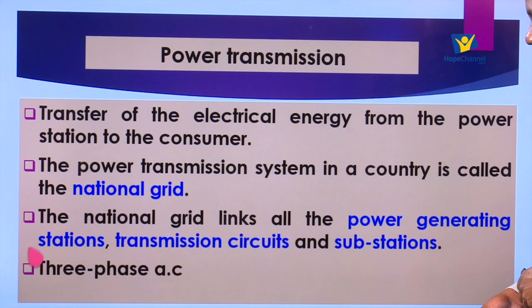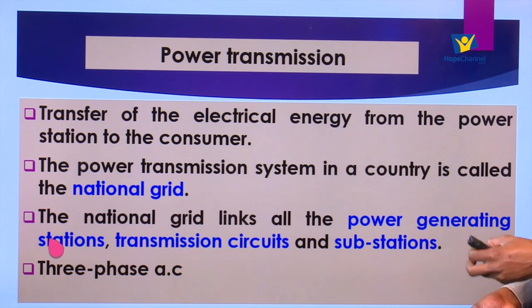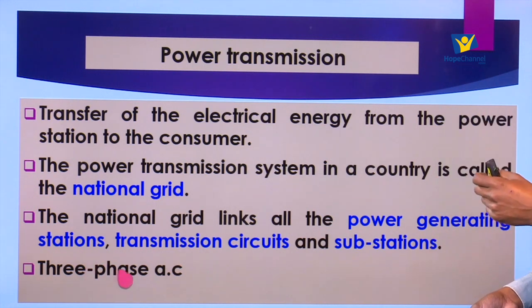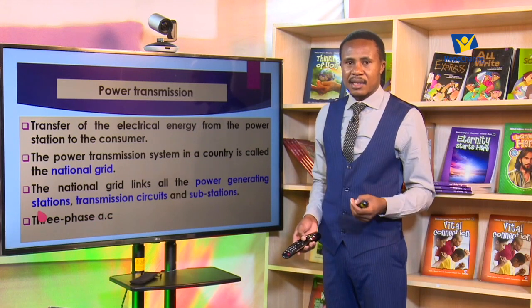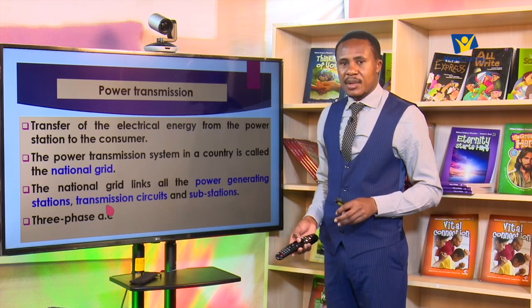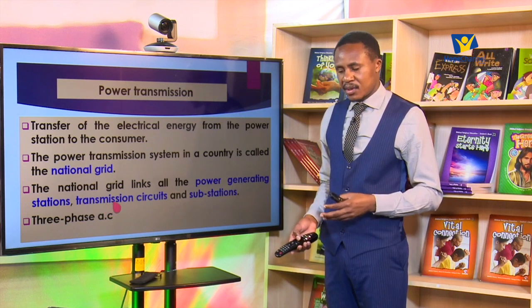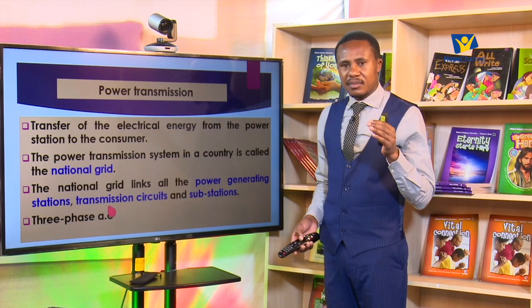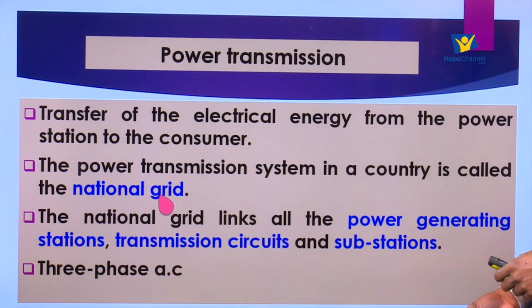In the grid system, power is transmitted in the form of three-phase alternating current. Power is generated in three phases, fed into the grid system as alternating current. AC is preferred because it can easily be stepped up or stepped down. Stepping up is necessary because it minimizes power losses in the process of transmission. Because of the distances involved, a lot of power may be lost, but stepping up minimizes what is lost in transmission.